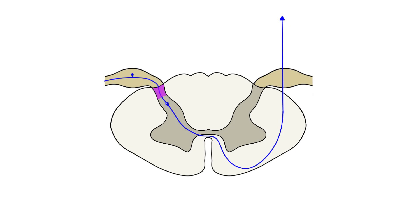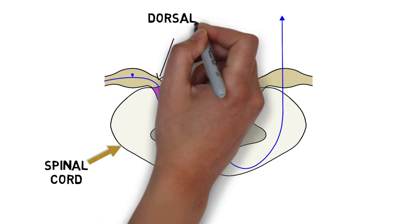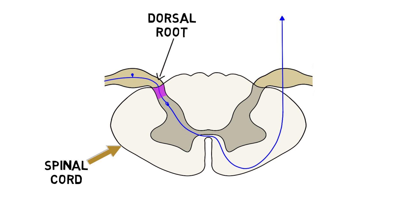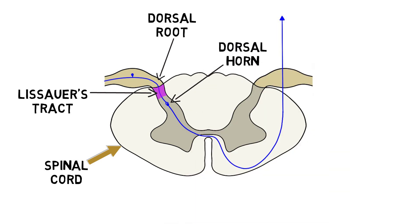The sensory neurons carrying these signals enter the spinal cord through the dorsal root and branch off into ascending and descending collaterals that travel up or down the spinal cord for one or more segments in a collection of fibers known as Lissauer's tract, before synapsing in the dorsal horn — an area of gray matter in the spinal cord — where they release the neurotransmitter glutamate as well as neuropeptides such as substance P.